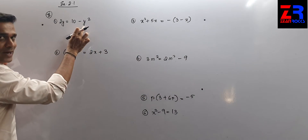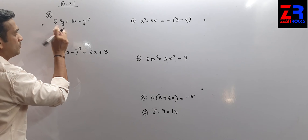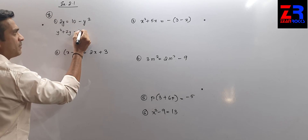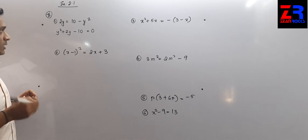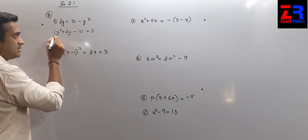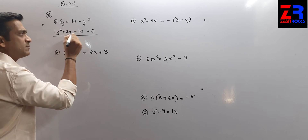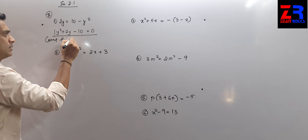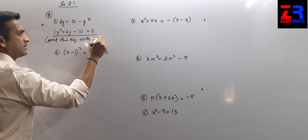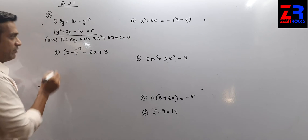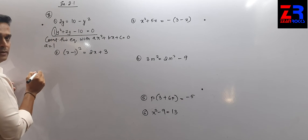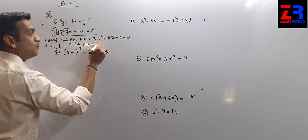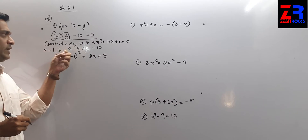Here minus y² moves to the left-hand side and becomes plus y². This gives y² + 2y minus 10 = 0. Comparing this with ax² + bx + c = 0, we get a = 1, b = 2, and c = minus 10.